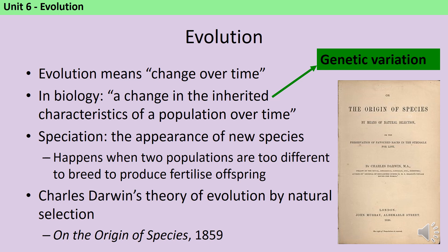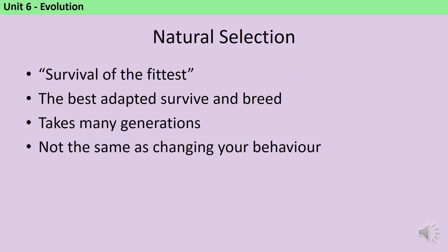Different scientists have proposed different theories for how evolution might occur, but we now believe Charles Darwin's theory of evolution by natural selection — written about in his book On the Origin of Species in 1859 — has the most supporting evidence, backed by years of experimentation, discussion, and links to developing knowledge of geology and fossils. Natural selection is sometimes called survival of the fittest: the organism best adapted to its environment survives longest. It's a long process taking many generations — it's not one organism changing its behaviour or genetics within its lifetime.